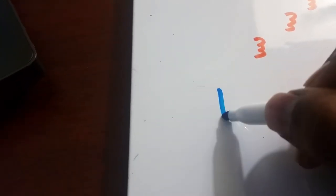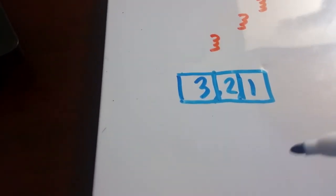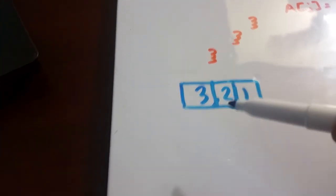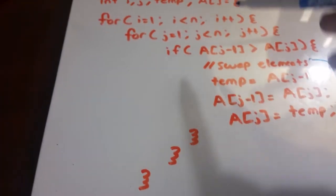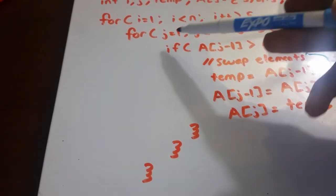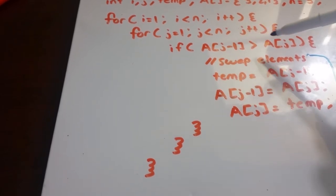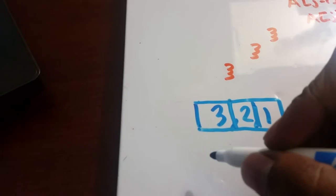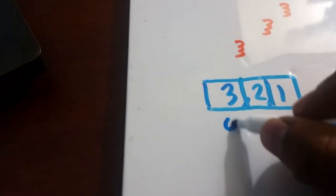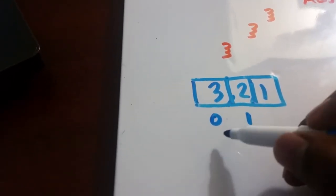So we have three, two, and one in our array. Let's use the bubble sort algorithm on this. First we go into our outer for loop — i equals one — then into the inner loop with j equals one. We're going to compare the elements at position j minus one (which is position zero) and position one. So we're checking if the element at position zero is greater than the element at position one.